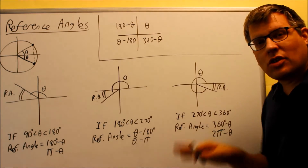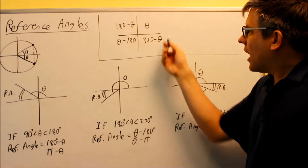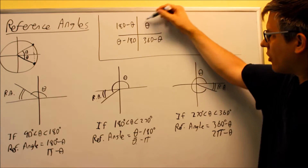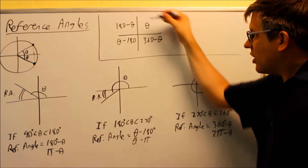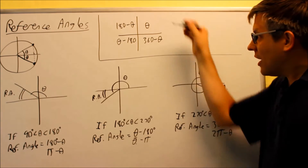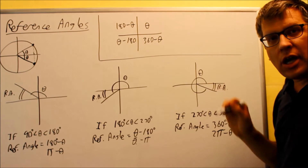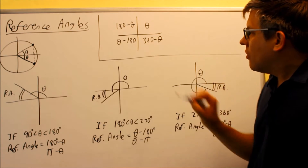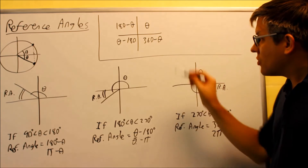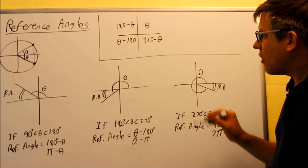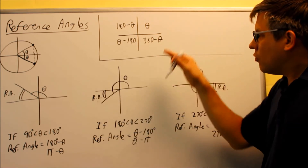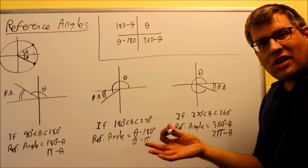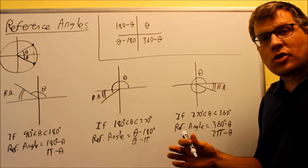If you want all this information in one spot, I have this little picture here that acts as a shorthand with all the reference angles on one drawing. Notice: if you're in the first quadrant, you don't even need a reference angle — that angle is already between 0 and 90, so theta itself is the reference angle. In the second quadrant: 180 minus theta. In the third quadrant: theta minus 180 degrees. In the fourth quadrant: 360 minus theta. That picture shows, depending on which quadrant you're in, how to find the reference angle. They'll give you an angle and ask you to find the reference angle — that's what the problems we're doing next are about.